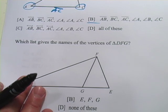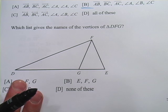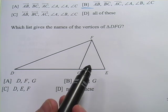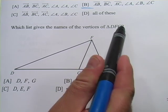All right, let's look at another one here. This says, which list gives the name of the vertices of triangle DFG?